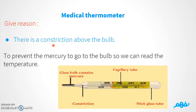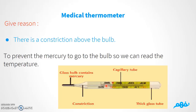Why do we have a constriction above the bulb? We have the glass bulb containing mercury, and the constriction is placed above it. The reason is to prevent the mercury from going back to the bulb when we are measuring temperature. The mercury needs to stay in position so it can expand if the temperature is high or contract if it is lower. So the constriction prevents the mercury from returning to the bulb so we can read the temperature accurately.